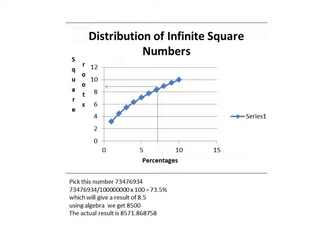Not 7.35% but using the number 7.3. When you follow the arrow, it will take you up to the curve, it will take you to 8.5. Then we will use some algebra which will bring it to 8500 so that there will be a good estimation for 73476934. And the actual square root is 8571.868758.